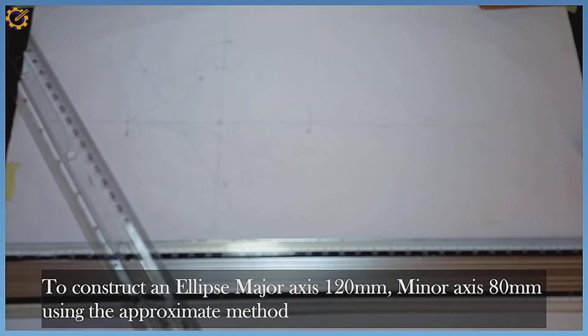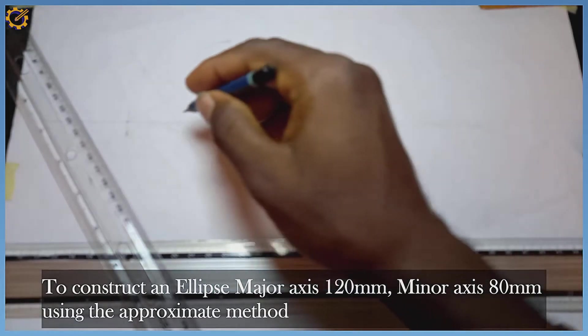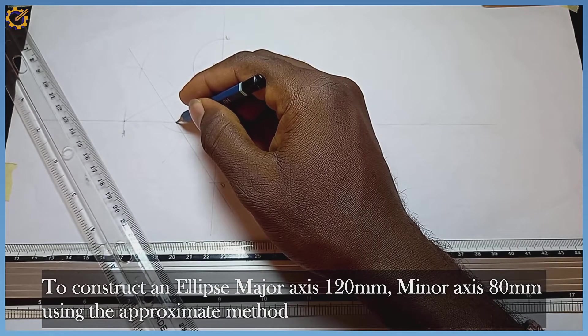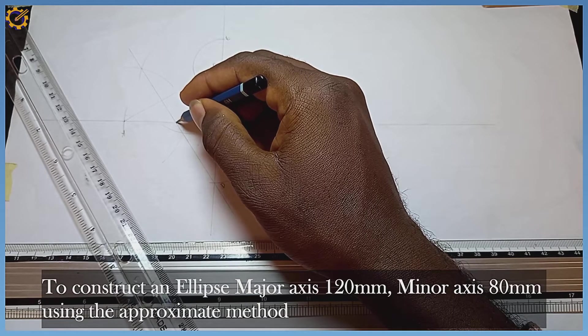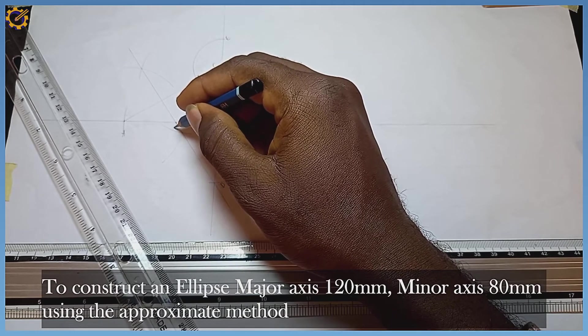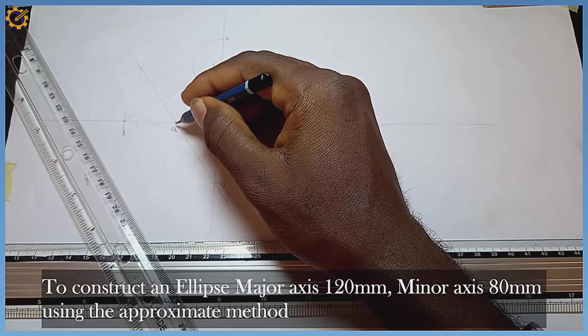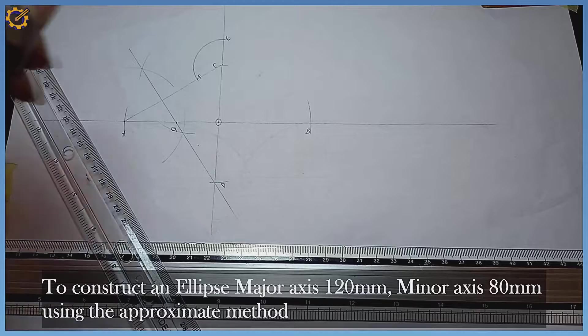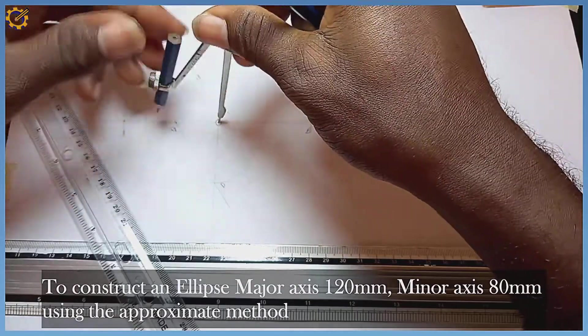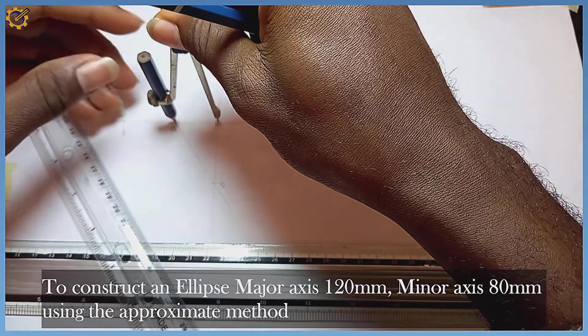Wherever my bisector touches the horizontal line, that is going to be my point G1. Picking my compass from mark O to mark G, I have G2.